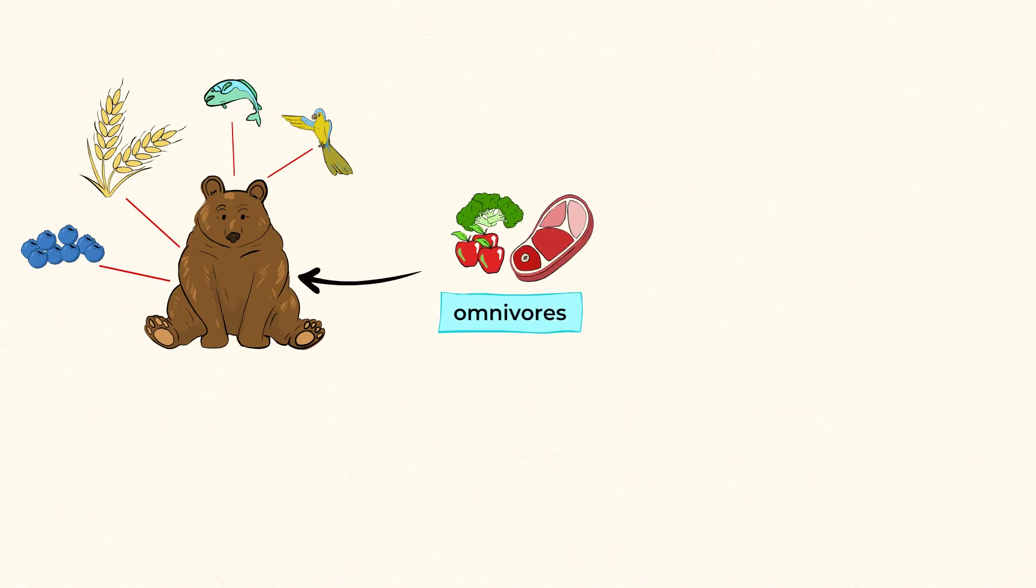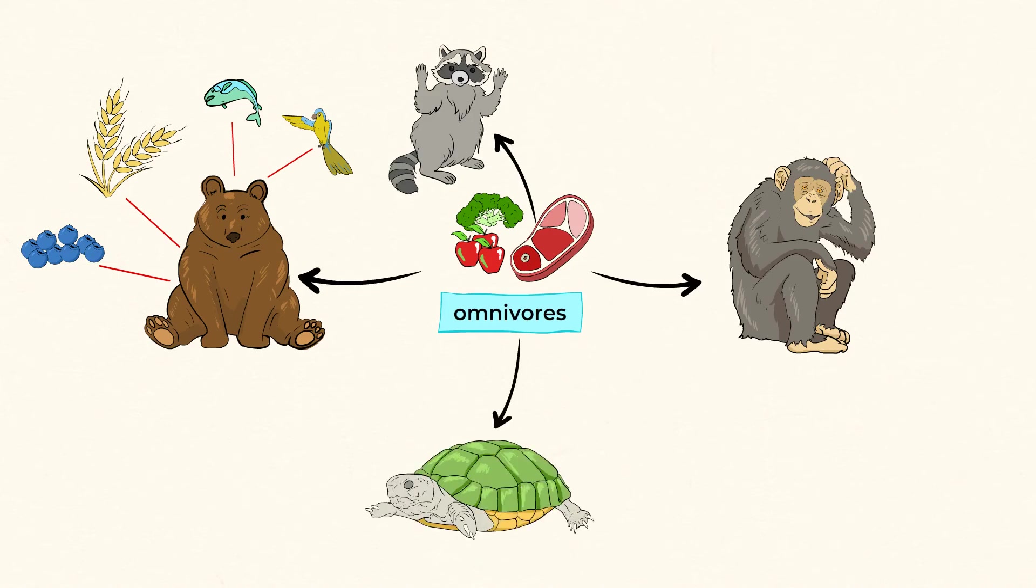Other animals that eat both meat and plants are raccoons, monkeys, and turtles.